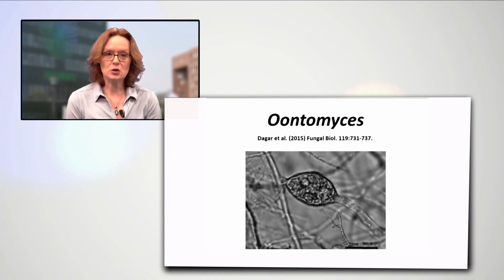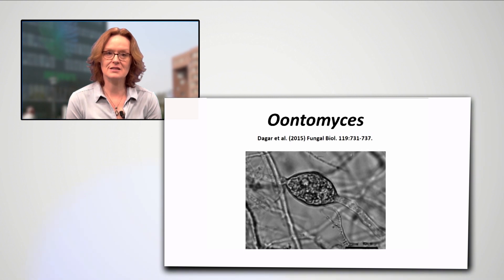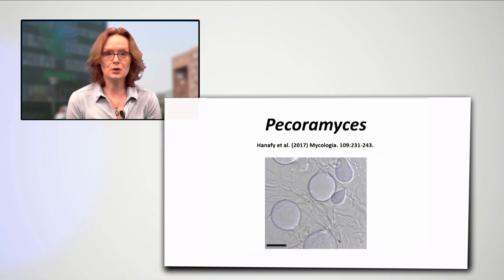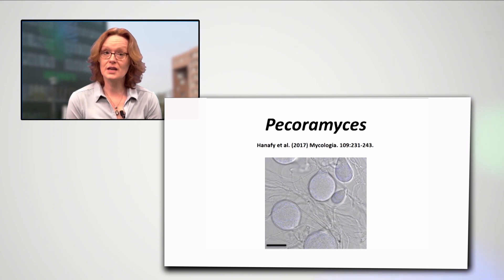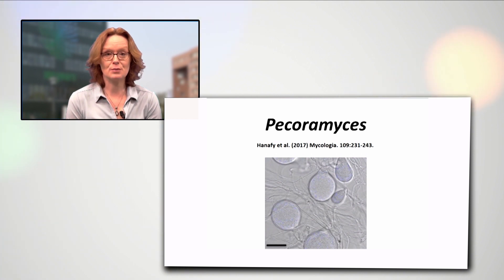The genus Untomyces seems to be unusual in that it is specific to camelids. The type strain of the Pechoromyces genus, formerly called Orpinomyces C1a, was the first anaerobic fungus to have its genome published.